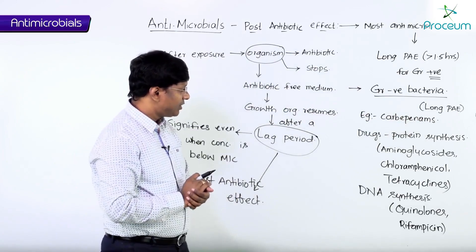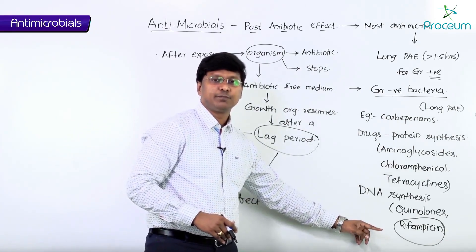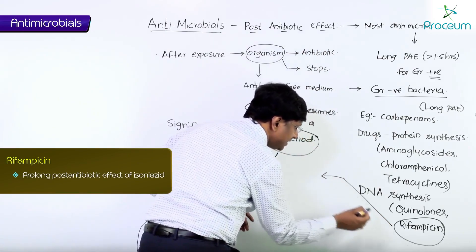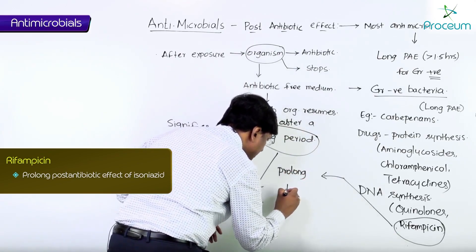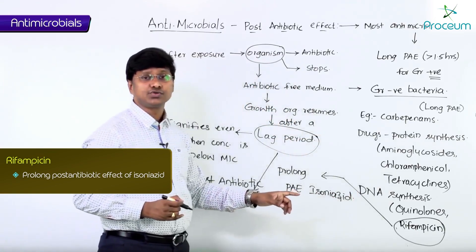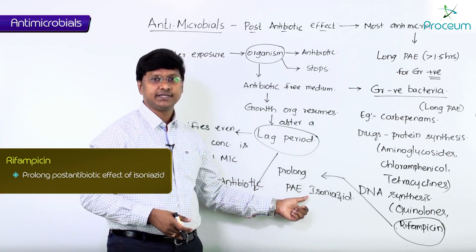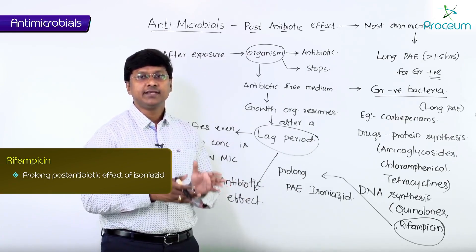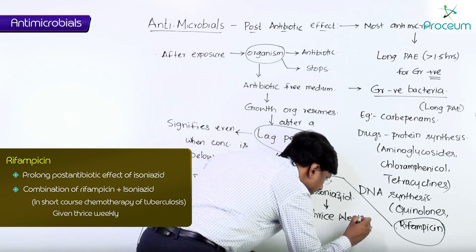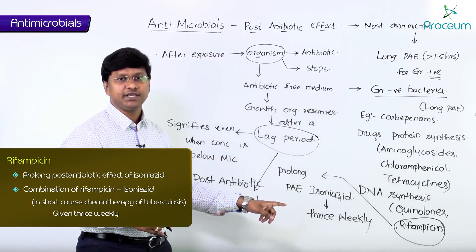Now regarding rifampicin — rifampicin is a first-line anti-tubercular drug. Remember, rifampicin will prolong the post-antibiotic effect of isoniazid, which is also a first-line anti-tubercular drug. Because of this, isoniazid can be given thrice weekly when given in combination with rifampicin.